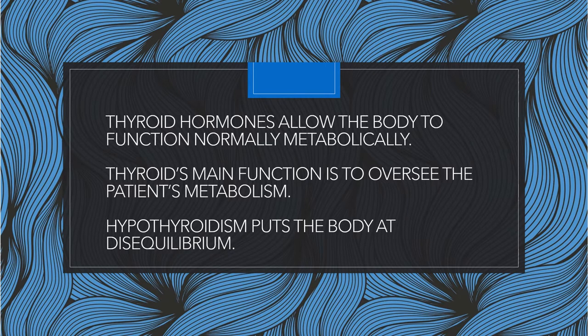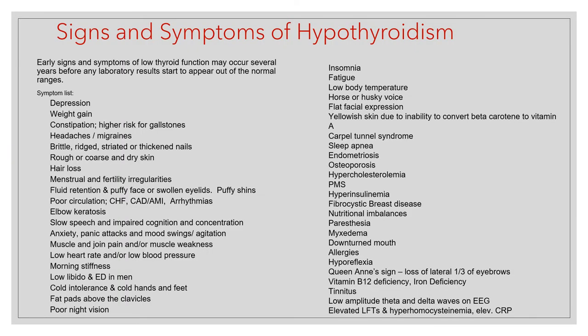It's important to understand that thyroid hormones allow the body to function normally metabolically — that is the thyroid's main function, to oversee the patient's metabolism. When you have low functioning thyroid, you have low metabolism rates and tend to be colder and more sluggish. Hypothyroidism puts the body at a disequilibrium, as does hyperthyroidism, and we want to correct this as naturally as possible. Depression is a key symptom — very often postpartum depression is a misdiagnosis when in fact it is postpartum hypothyroidism, sometimes Hashimoto's autoimmune. Please, before placing a woman on antidepressants for postpartum depression, do a thorough check of thyroid function.